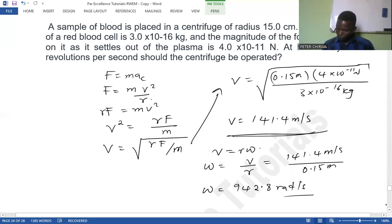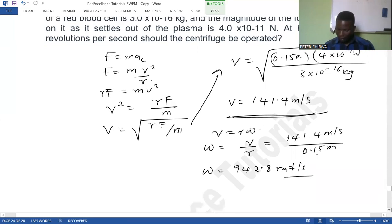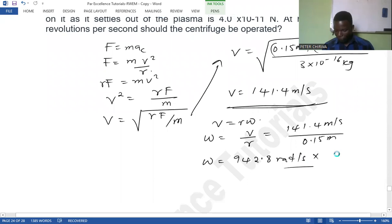All right. Rad per second, which we convert again to rev. So we know 1 rev over 2 pi rad. So the angular speed is going to be 150 rev per second.